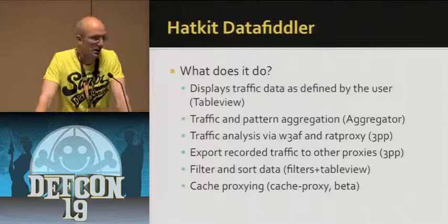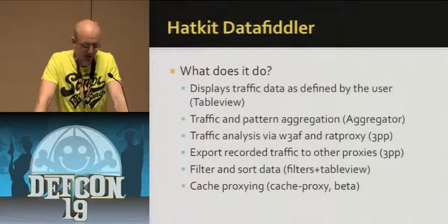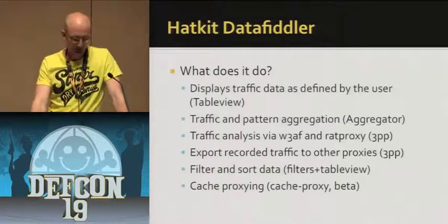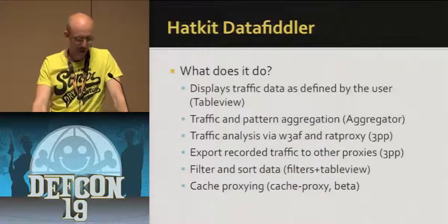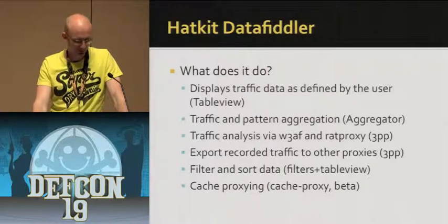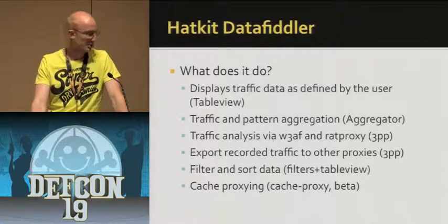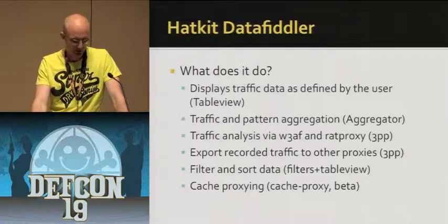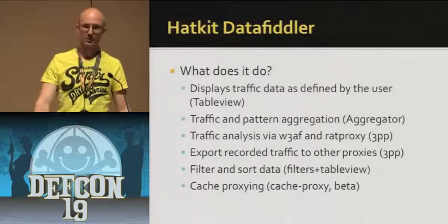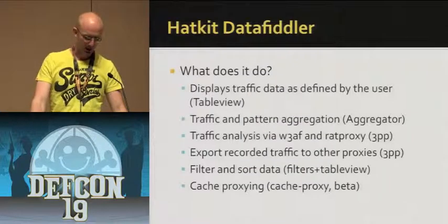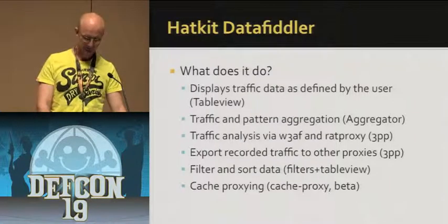As of the DEFCON release, there are four applications implemented. The ones that exist today are: table view, which gives summarical information in a highly flexible table that can be tailored by the user; the aggregator, which does traffic and pattern aggregation; a third-party plugin which can utilize W3AF and RAT proxy to analyze pre-recorded traffic and also export data to other proxies; and it also contains common functionality to filter data to work on only the relevant parts. There's also a cache proxy, which is still in alpha.